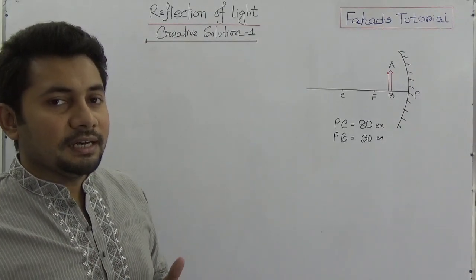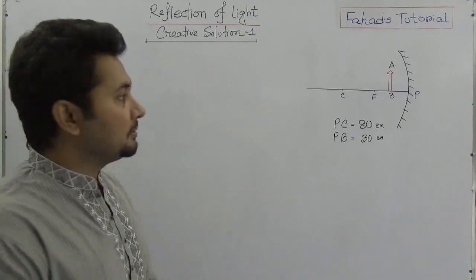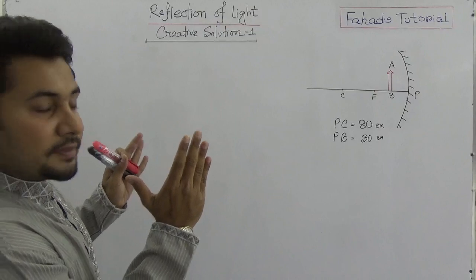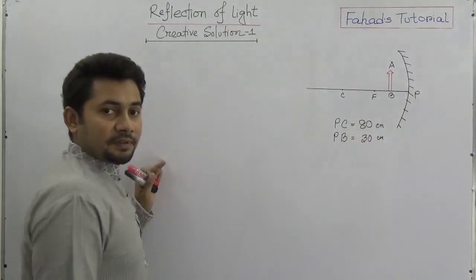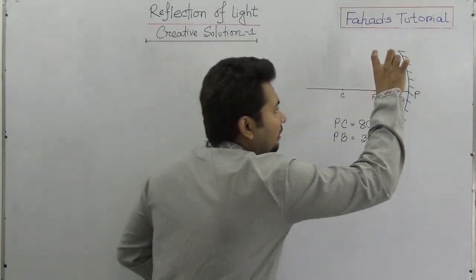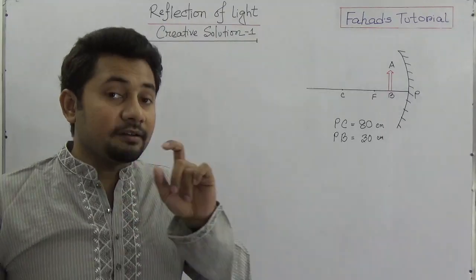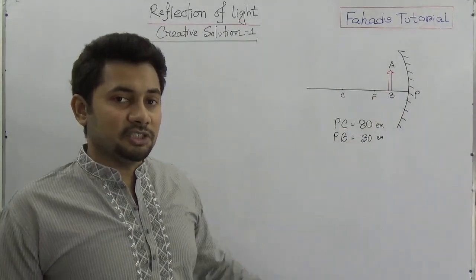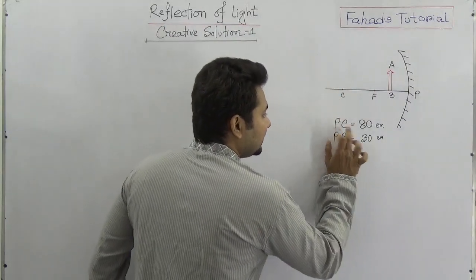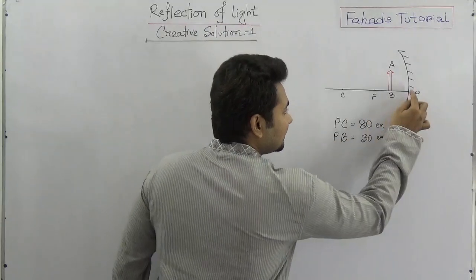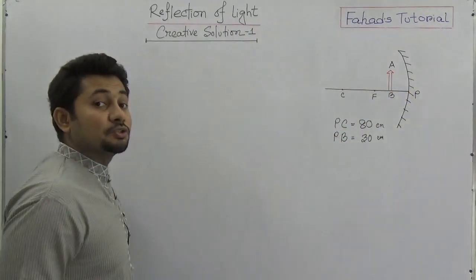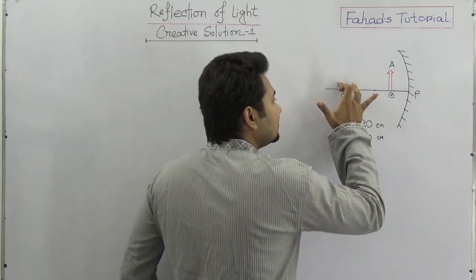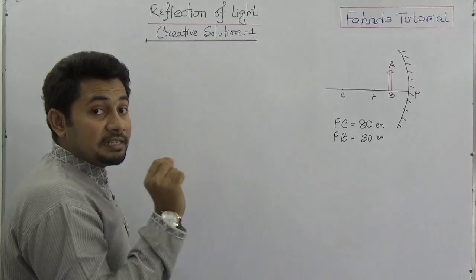In the creative questions, consider a figure where object AB is placed between the pole and the focus — you can see the object is placed in position number six. If you remember the tutorial I uploaded on the rule of six, you know where the image will be. The data given is PC equals 80 cm and PB, the object distance, is 30 cm. PC is the center of curvature, so CP is the radius of curvature.